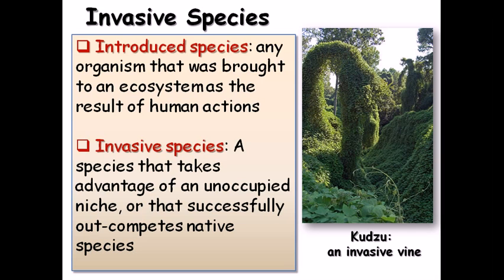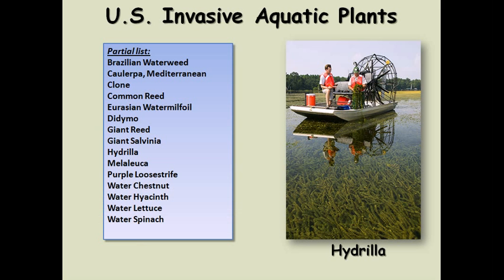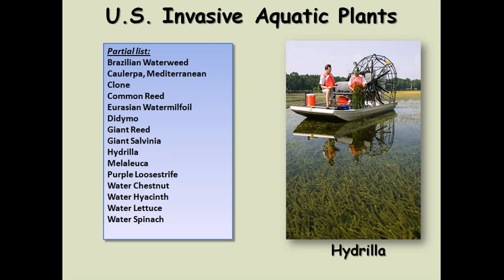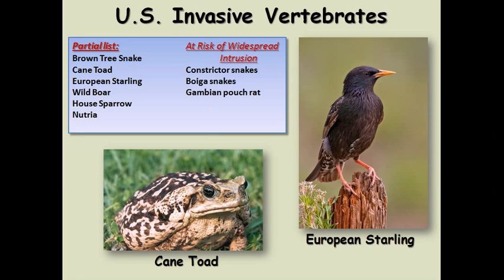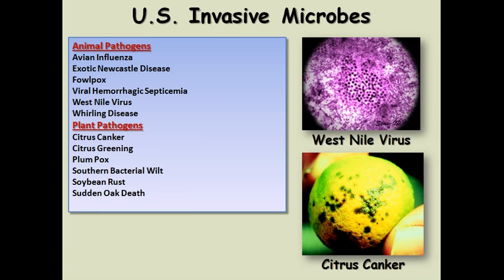This is the effect of invasive species, and here you can see examples of invasive species. Hydrella is an invasive species in this case — this is a U.S. invasive aquatic species. Also shown here are the European starling and cane toad. A partial list includes the cane toad, European starling, wild boar, and others. Species at risk of widespread destruction include snakes and also microbes. Examples of invasive microbial species include the West Nile virus and citrus diseases.